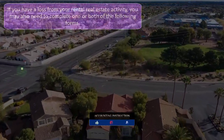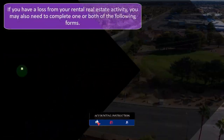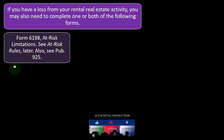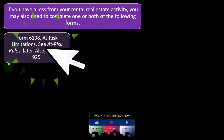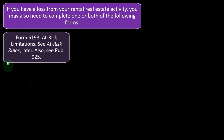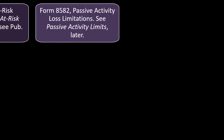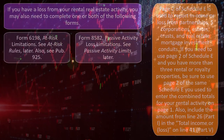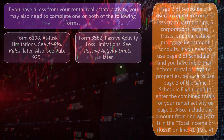If you have a loss from your rental real estate activity, you may also need to complete one or both of the following forms: Form 6198 for at-risk limitations — see at-risk rules later and Publication 925 — and Form 8582 for passive activity loss limitations. See passive activity limits later, and we'll get into those in the next presentation.